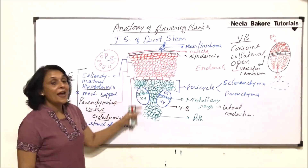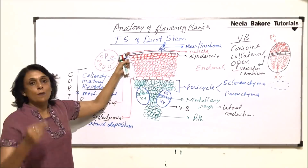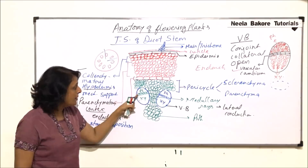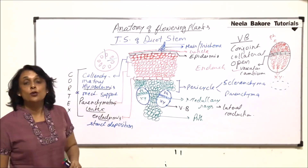These are the primary tissues — the first-formed tissues. From outside to inside the sequence is: epidermis, hypodermis, parenchymatous cortex, endodermis, pericycle, phloem, cambium, xylem, and pith. This stem shows secondary growth, so in the next part we will discuss how this structure of the stem shows secondary growth.